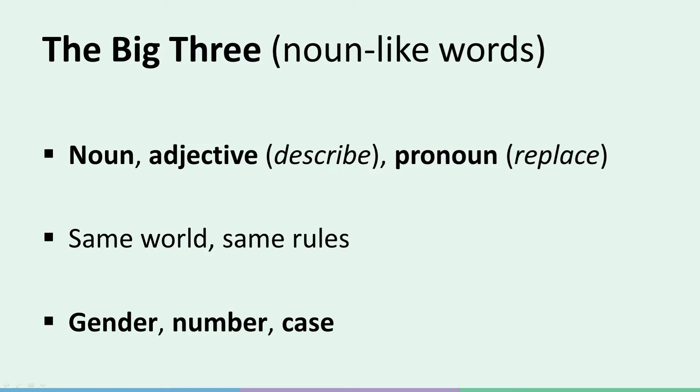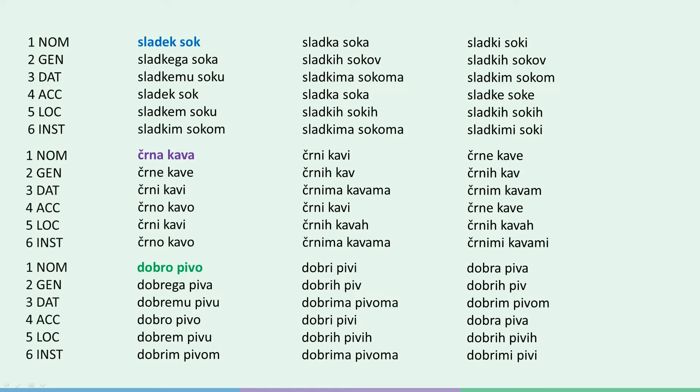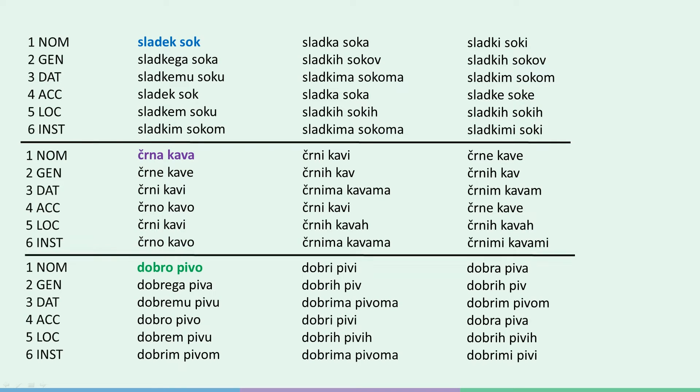Now on to the fun stuff. This is the table that covers everything that has to do with nouns and adjectives. 'Sladek sok' means sweet juice, 'črna kava' means black coffee, and 'dobro pivo' means good beer. Let's show how the three categories interact in the same table. Everything above the upper black line is masculine, marked with blue. Everything in the middle is feminine, marked with purple. And everything below the lower black line is neuter, marked with green.